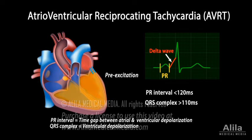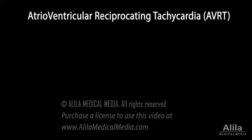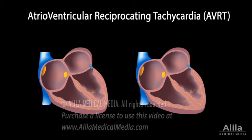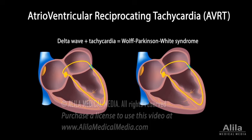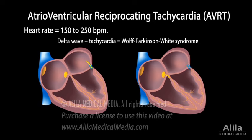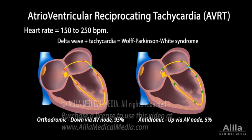However, the presence of the accessory pathway alone is not enough to cause tachycardia. AVRT develops when electrical impulses travel down one pathway — either the normal or accessory — then back up via the other, creating a loop or re-entrant circuit. The frequency of this loop determines heart rate and can be very fast. AVRT can be orthodromic or antidromic depending on the direction of the loop.